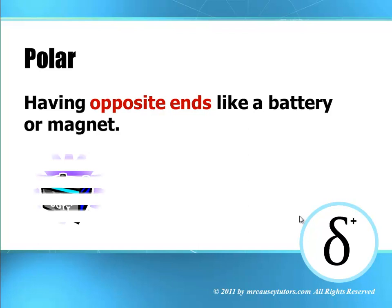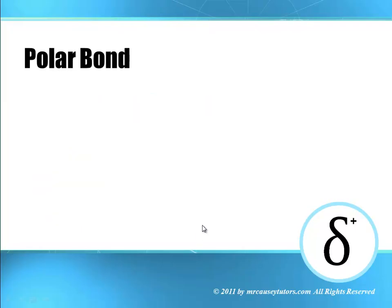Polar means having opposite ends, like a battery or a magnet. Or you might look at the little energy cells that you use for running your iPods and things of that nature — that's going to have two ends, a negative end and a positive end. And that is polar. So we are looking for something with opposite ends or opposite charges.